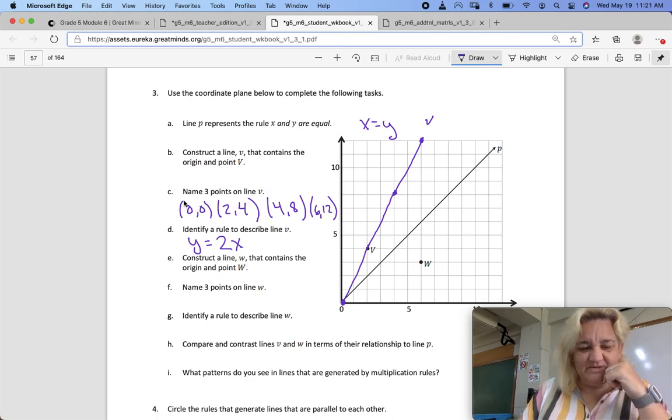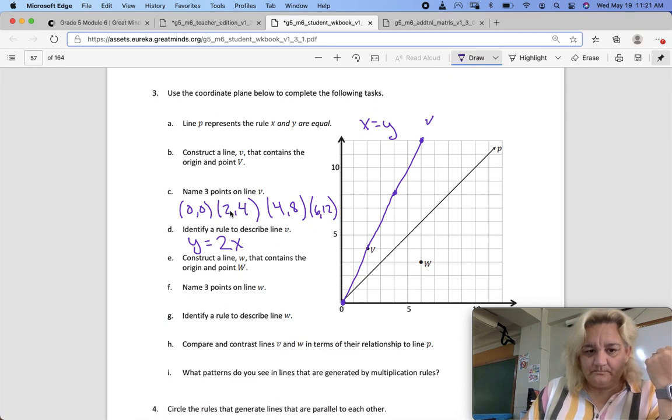Identify a rule to describe line V. Y equals 2 times X. So 0, 0. 0 times 2 is 0. Still 0, 0. If X is 2, 2 times 2 is 4. If X is 4, 2 times 4 is 8. If X is 6, 2 times 4 is 12. Our rule is Y equals 2X.